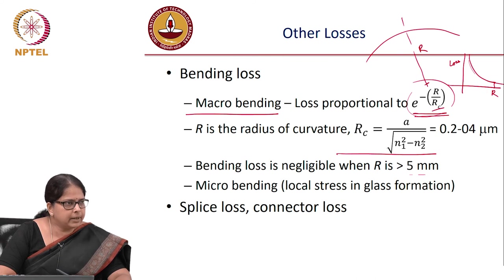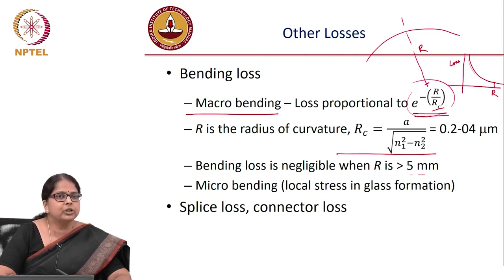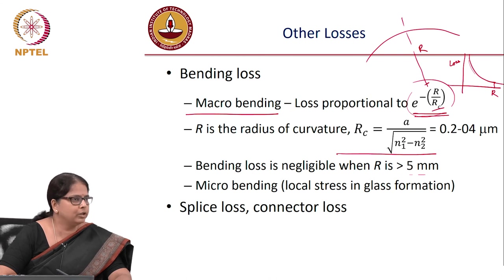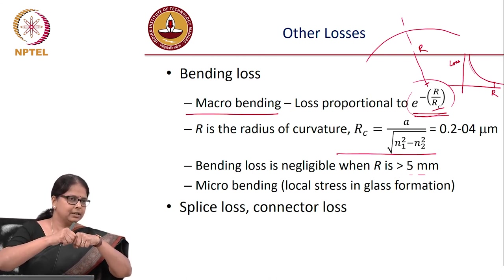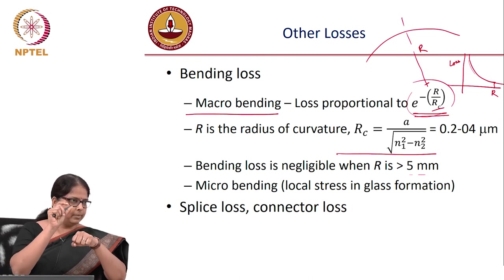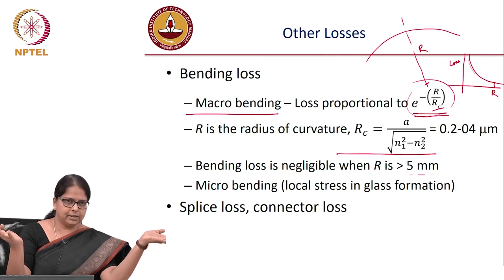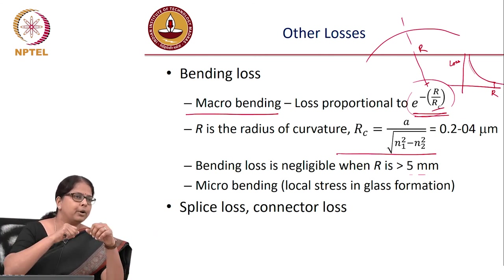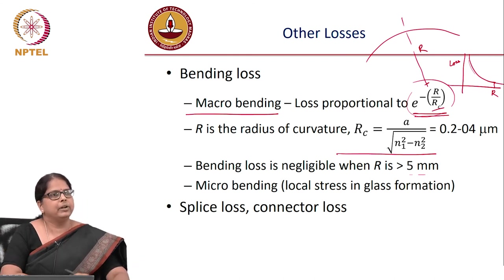When laying a fiber link, there will be connector loss and splice loss in addition to fiber attenuation. Connector loss must be kept as close to 0 dB as possible. Since the fiber core is only 10 μm, a dust particle of that size completely obstructs light — this is why cleaning connectors before every connection is critical.